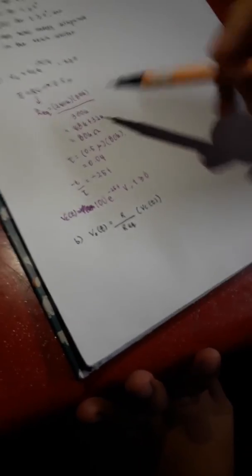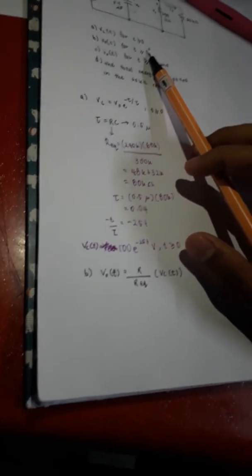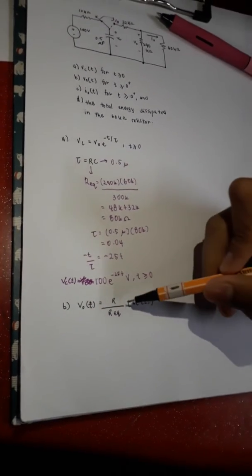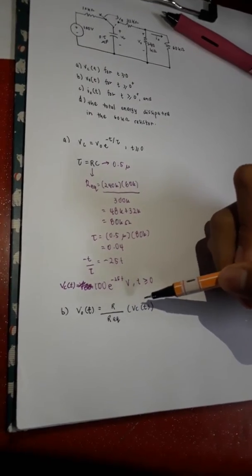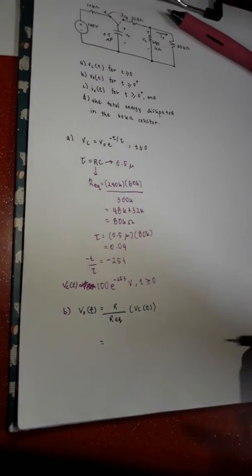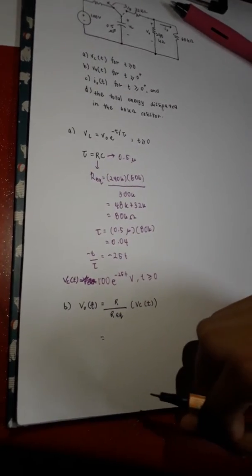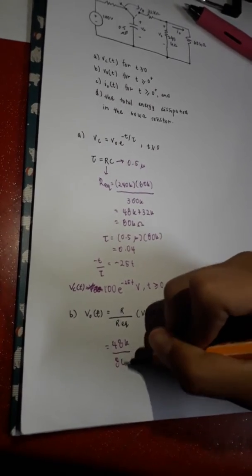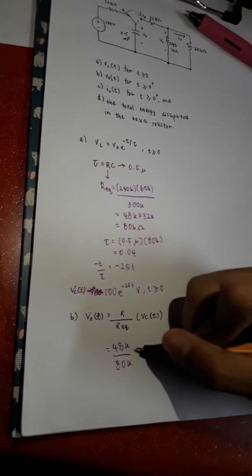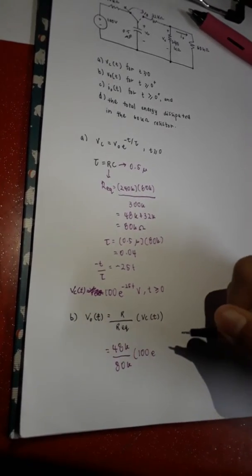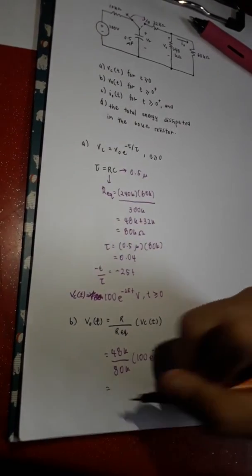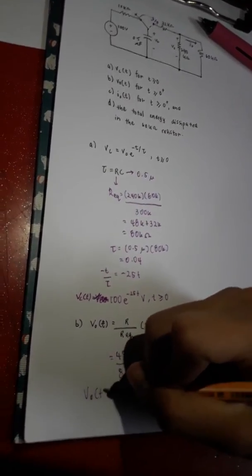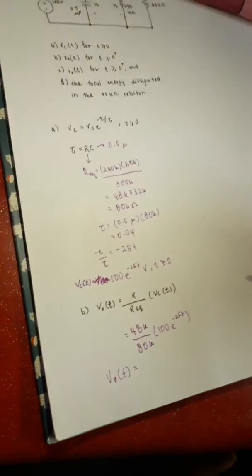So, for the next question, we need to find the V0 for T equals to or more than 0 positive. So, we will use the voltage division rule. The resistor divided by equivalent resistor multiplied with VC. So, the resistor here is 48K ohm divided by 80K ohm and multiplied with the 100 exponent power of 25T. So, there we get the V0 T equals to 0.